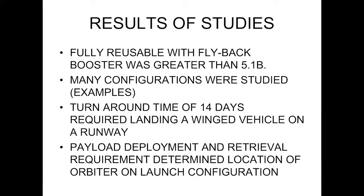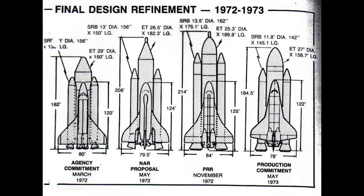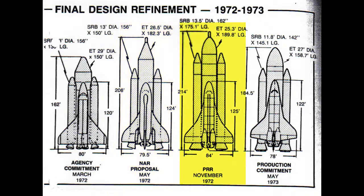The payload deployment and retrieval requirement determined the location of the orbiter on the launch configuration, because with that large payload bay, it would be very difficult to put it on top of the vehicle. This was the agency commitment in March of 1972. In May of 1972, you had the North American proposal, and I became Orbiter Project Manager in August of 1972. We did a study — PRR, the preliminary requirements review — and the production commitment was made in May of 1973.